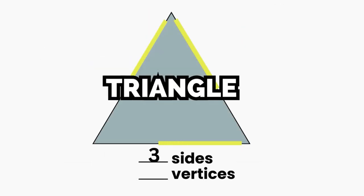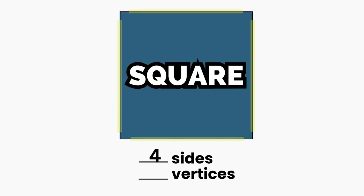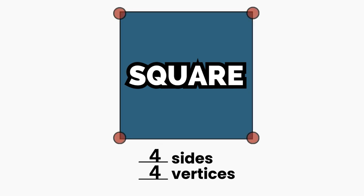A triangle has three straight sides, three sharp points where they collide. A square stands tall with four equal sides, four vertices straight and wide.